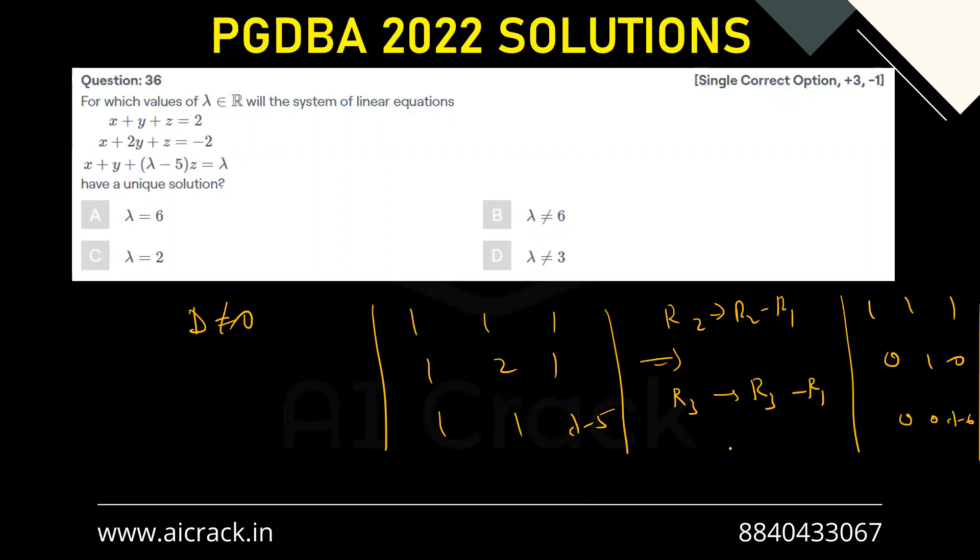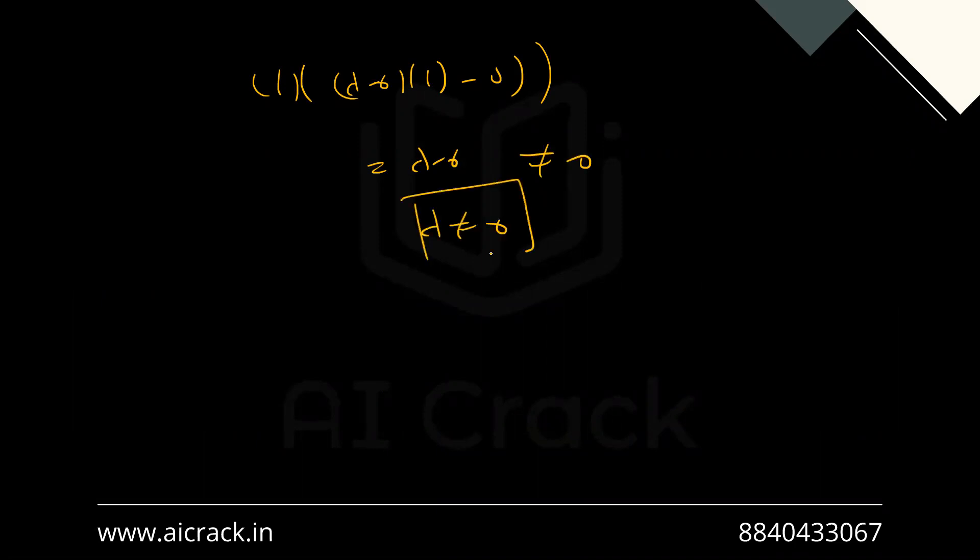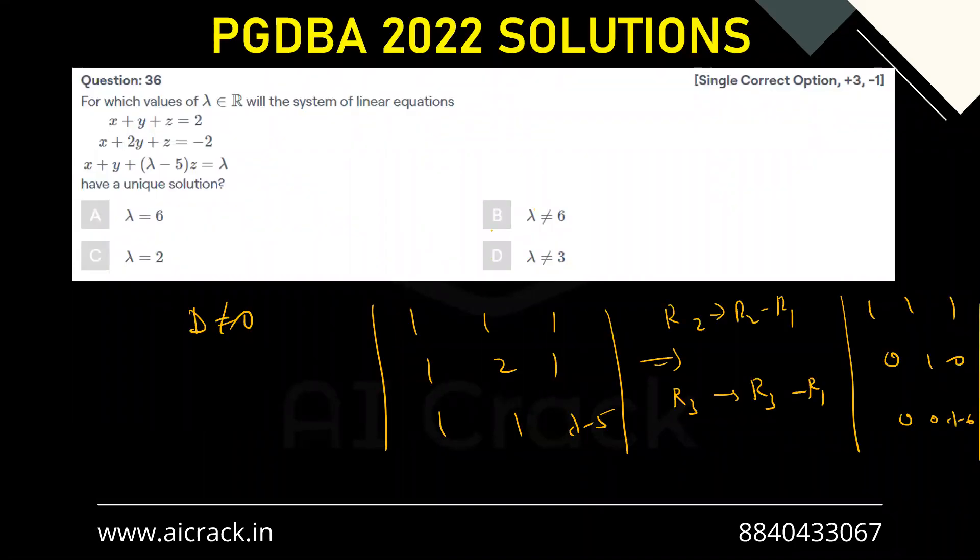So if we try to open this up, we'll be getting 1 times lambda minus 6 times 1 minus 0. So that is nothing but lambda minus 6 and that should not be equals to 0. So lambda should not be equals to 6. So B is the correct answer.